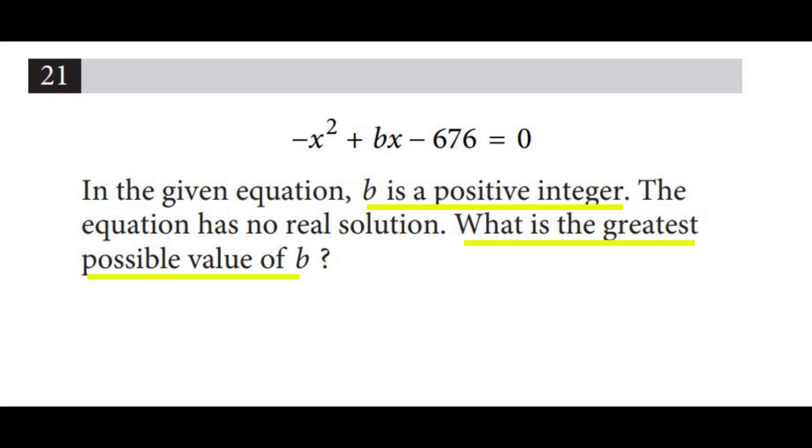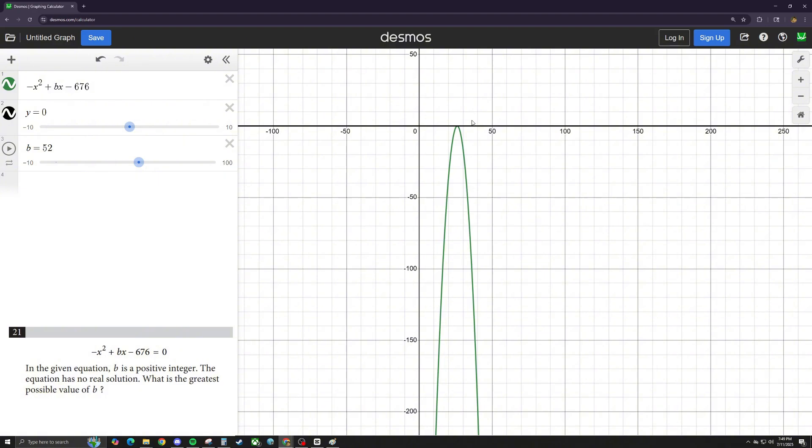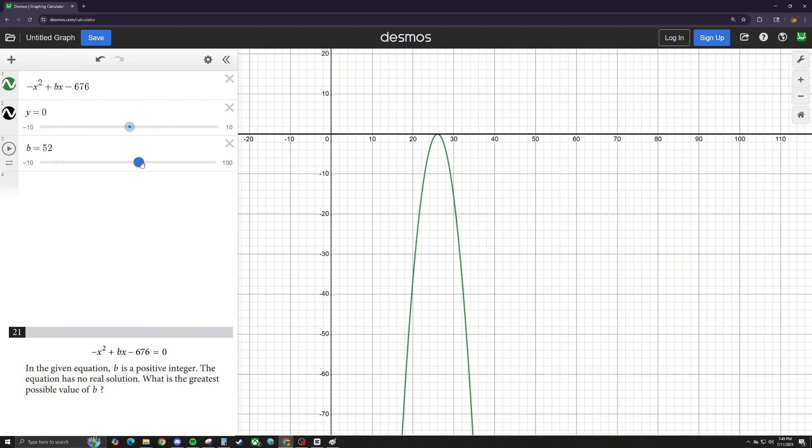We can solve questions that ask to find the value of some constant like b by making a slider and moving it to reach whatever condition the question is asking for. For this question, you would plot negative x squared plus bx minus 676 and y equals zero. Make a slider for b and just keep moving it until there are zero points of intersection, meaning there are no solutions to this equation. That will give you your answer for b. Here, you see that when you have b equals 52, you do have a point of intersection. So moving it one value over to b equals 51 shows there's no point of intersection, and that has to be your answer.